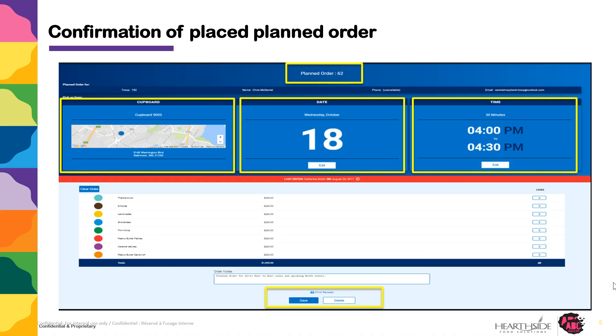To delete the order, click Delete at the bottom and a confirmation message will appear. You can also delete the order by going to the Manage Order screen, where you can delete or edit the planned order.